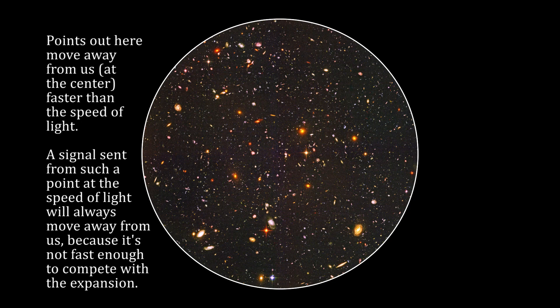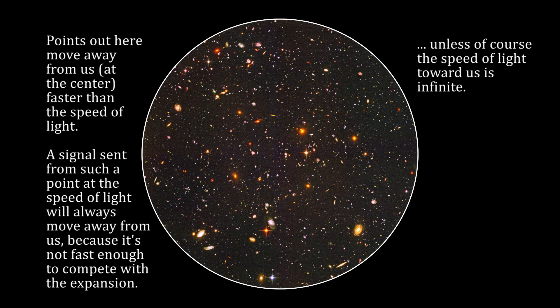This doesn't violate relativity, by the way, because nothing is moving through space faster than c. But if the speed of light toward the observer is infinite, this boundary can't exist. Light that is emitted from a galaxy beyond the boundary should still reach us immediately, so why can't we see it?